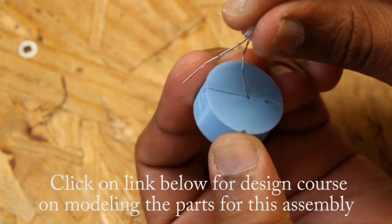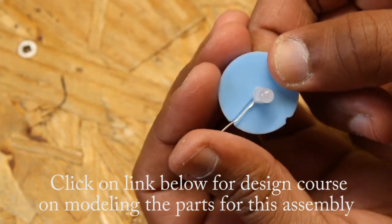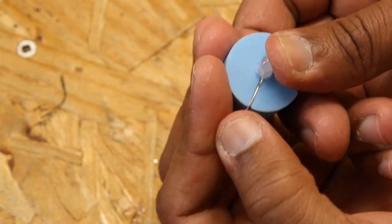To assemble this, we're going to insert the short leg right through the center hole, and we'll take that long leg and just run it through that channel and bend it to the side.